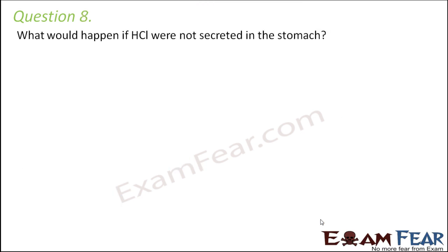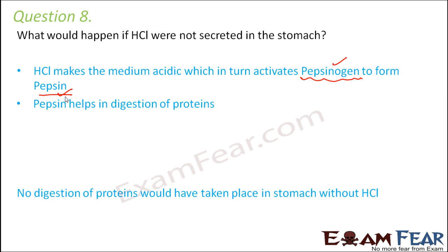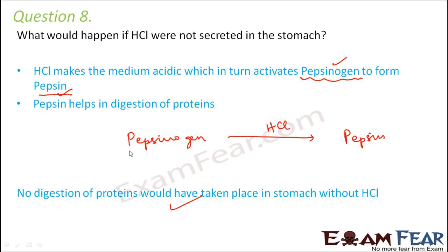Question number 8: what would happen if HCl were not secreted in the stomach? In the stomach, gastric glands secrete pepsinogen, which is inactive. HCl provides the acidic medium required to convert pepsinogen into the active enzyme pepsin, which helps in the digestion of proteins. If HCl were not present, the medium would not be acidic, pepsinogen would not be converted into pepsin, and digestion of proteins would not take place in the stomach.